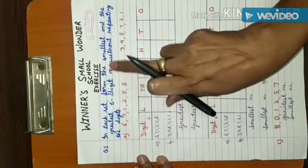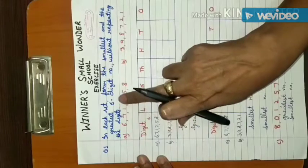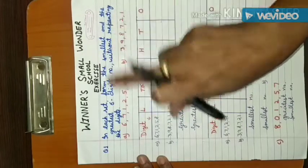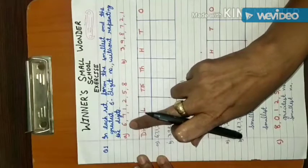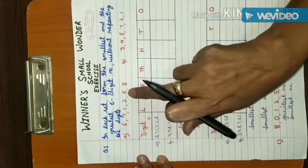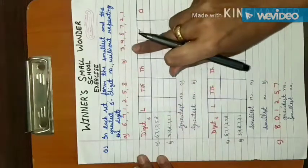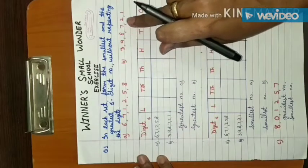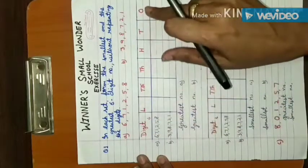Next, find the smallest and greatest 6-digit numbers without repeating the digits. The first set of digits is 6, 7, 1, 2, 5, 8. The second set of digits is 3, 9, 8, 7, 2, 1.